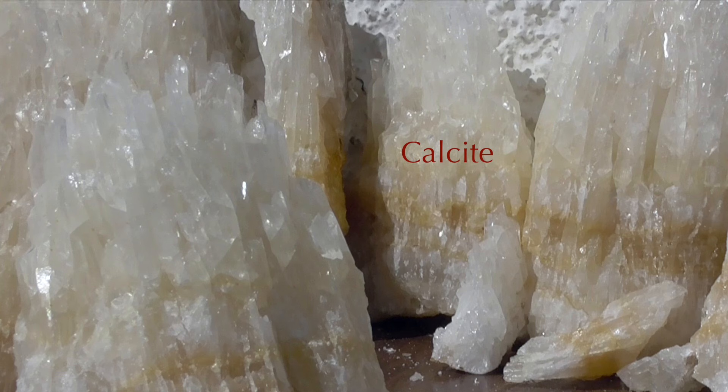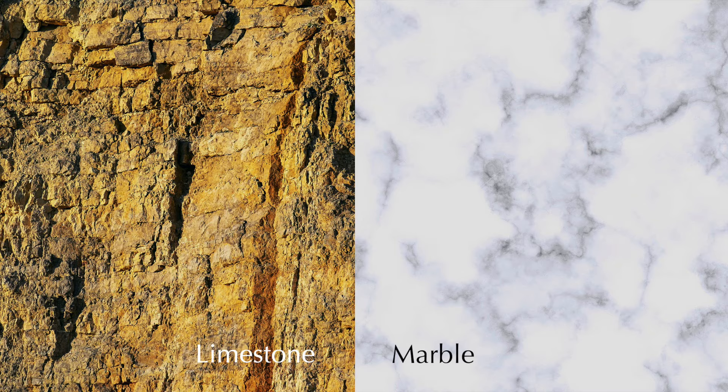The mineral calcite, for example, makes up both limestone and marble. The difference between these rocks is that in marble, the calcite crystals have a different, more compact structure. They got this way by being compressed deep in the Earth's crust.